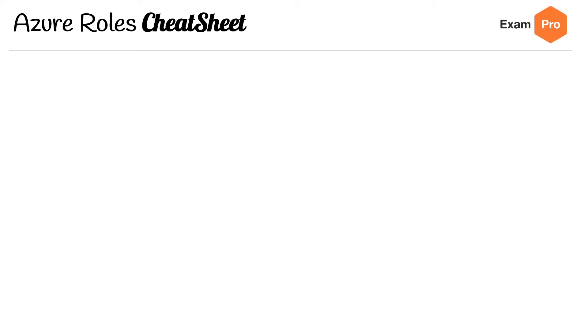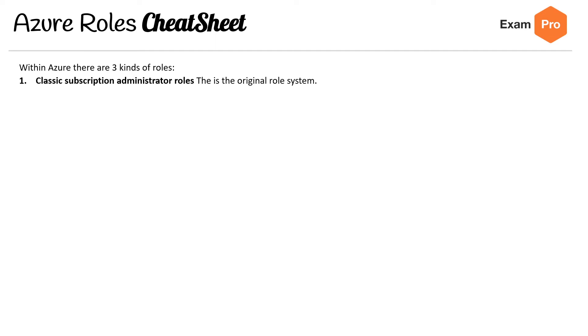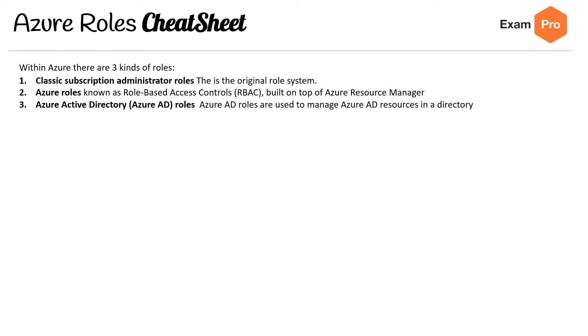Hey, this is Andrew Brown from Exam Pro, and we are looking at the Azure roles cheat sheet. When we say Azure roles cheat sheet, we're actually talking about all the roles, not just the Azure roles, because there's three types: you've got the classic subscription administrator roles, you have Azure roles — also known as role-based access controls — that's built on top of ARM, and then you have Azure Active Directory roles.